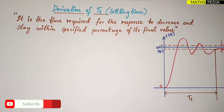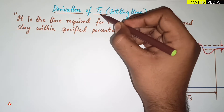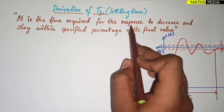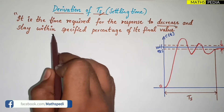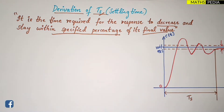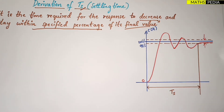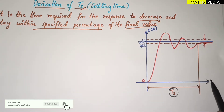In this video we will be discussing the derivation of settling time, denoted by Ts. The definition: it is the time required for the response to decrease and stay within a specified percentage of its final value. It is basically a tolerance band. As you can observe in the graph I have drawn here, settling time relates to the response curve.